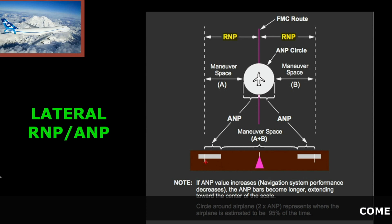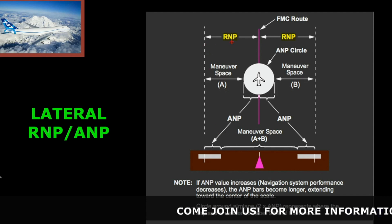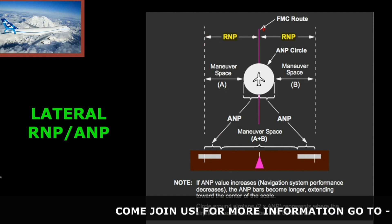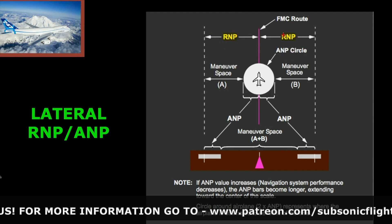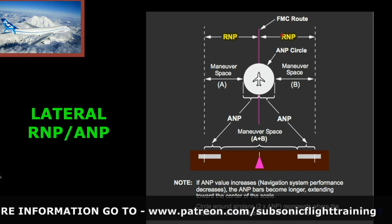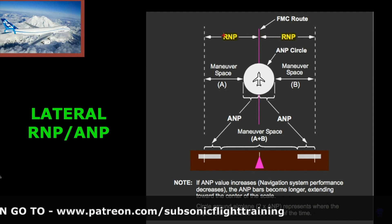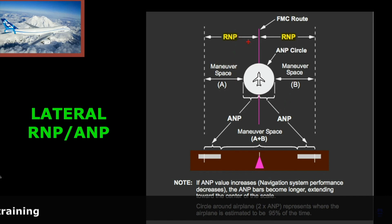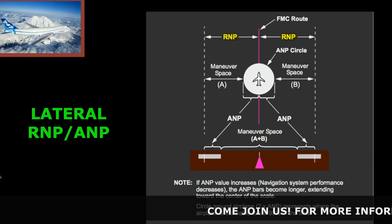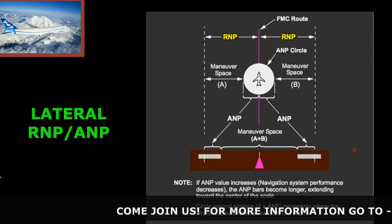The RNP is represented by these single vertical hash marks, in reference to whatever the RNP is from your airplane centerline for the airspace you're in. That's going to change — en route it might be 2, in the approach area it might be 1, on departure it will be 1, but on the approach it may be 0.3 for an RNAV GPS. The circle around the airplane is 2 times the ANP, representing where the airplane is estimated to be 95% of the time by the FMC.